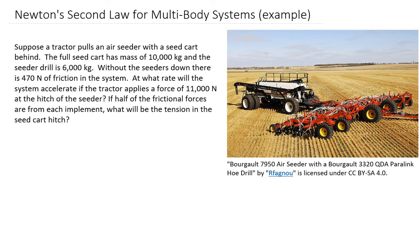In this video we'll do an example of multi-body systems using Newton's second law. This example is a little more sophisticated than we usually see in physics textbooks, but we'll see that it reduces down to the same thing. We have a tractor pulling an air seeder with a seed cart in the back. The full seed cart has a mass of 10,000 kilograms and the seeder drill is 6,000 kilograms.